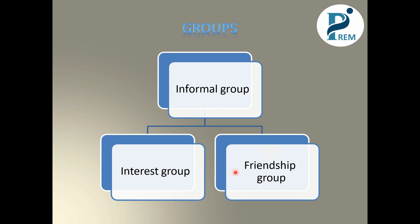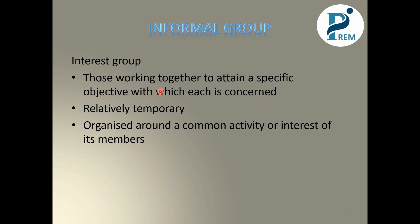Within Informal Groups, there are also two types: Interest Groups and Friendship Groups. In Interest Groups, people work together to attain a specific objective with which each is concerned. For example, if you are doing freelancing and your friends are also working in the same field, you can find your interest in that particular task. This is also temporary. People organize themselves around their common activity and interest and meet in that system.